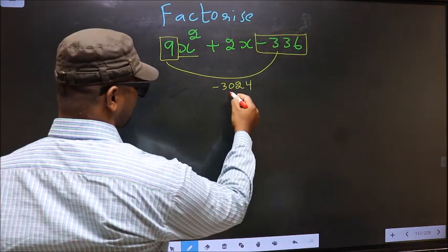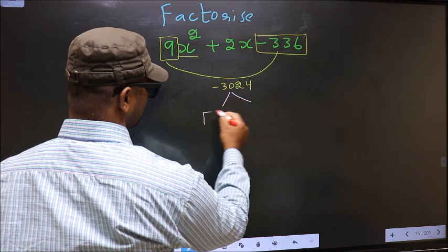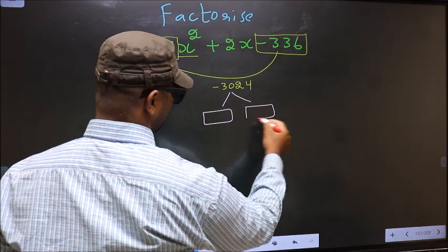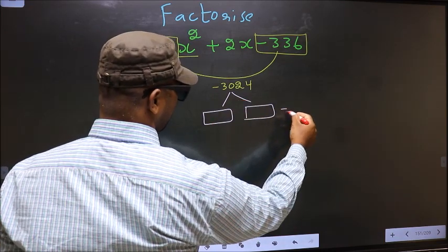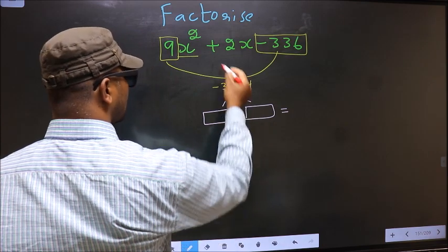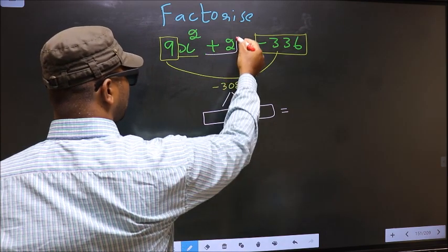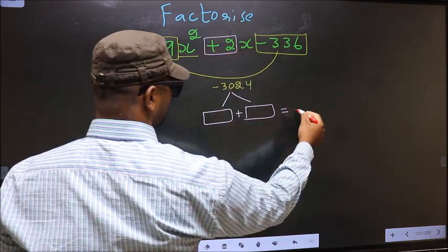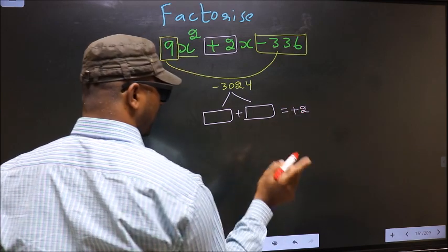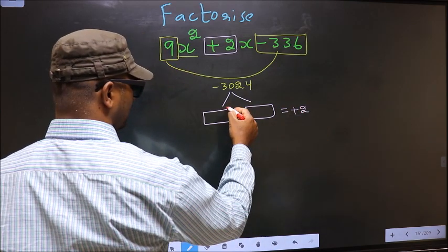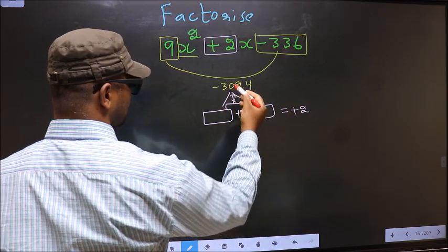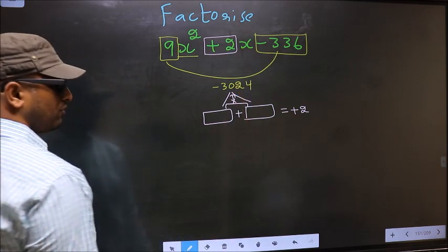Now you should look for 2 numbers such that when you add these 2 numbers you get the middle coefficient, plus 2, and also when multiplied you get -3024.